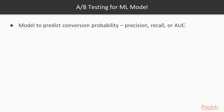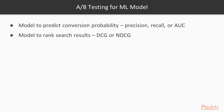So you may have two models — one optimized for precision and one for AUC. Then you can run some A/B testing and see which one increased the revenues, conversion, or whatever business metric you are interested in. The same applies for other models, like ranking search results or recommending new products.